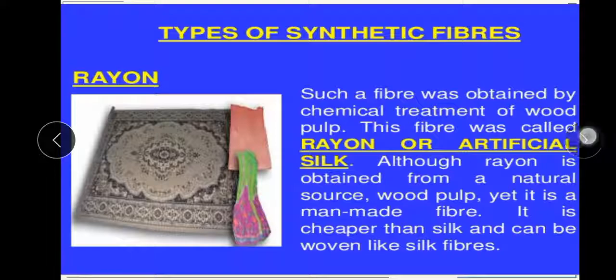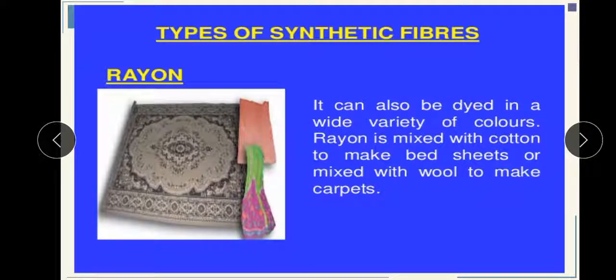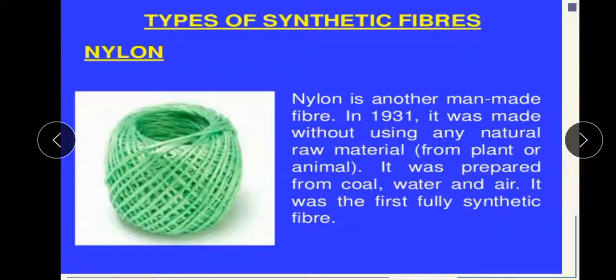Rayon is also used for making bedsheets and carpets by mixing it with cotton. There are many colorful types of rayon available in markets in the form of bedsheets, carpets, curtains, and other forms. Now we will talk about the second type — nylon.